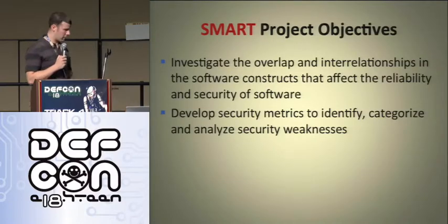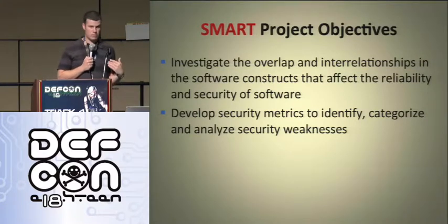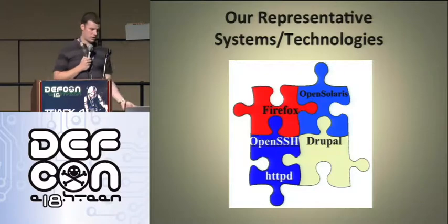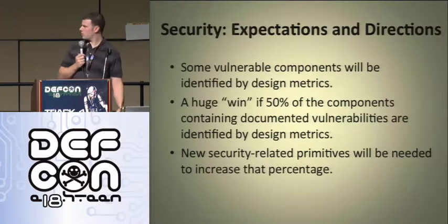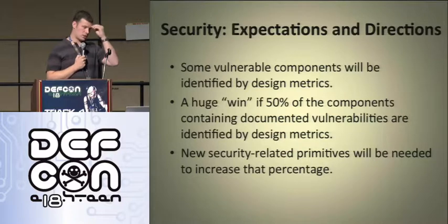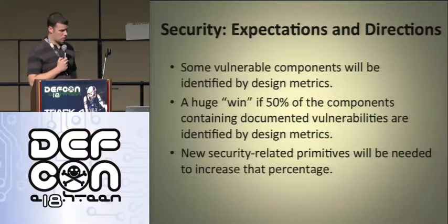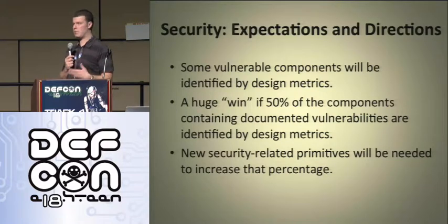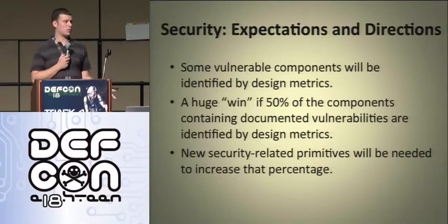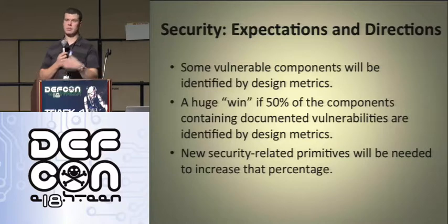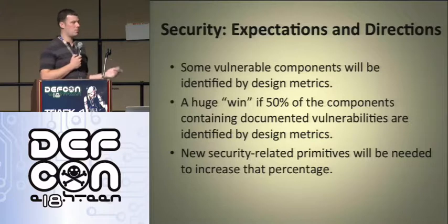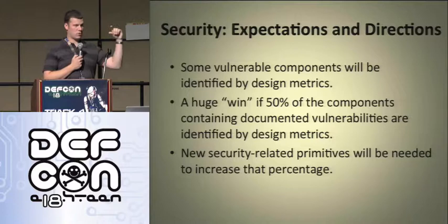Project objectives: we wanted to investigate the overlap and see how much overlap there is, and whether our system can actually find vulnerable pieces of code. The systems we analyzed were Firefox, OpenSolaris, OpenSSH, Drupal, and Apache. We considered it a win if 50% of the components containing documented vulnerabilities — CWEs or CVEs — would be identified. We gathered all reported vulnerabilities on these products, ran the metrics on specific versions, and asked: were we actually able to identify those vulnerability-prone components?